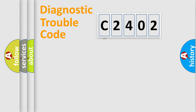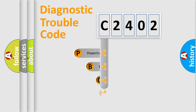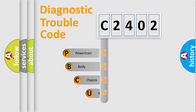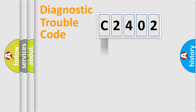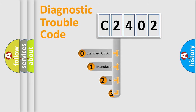First, let's look at the history of diagnostic fault code composition according to the OBD2 protocol. We divide the electric system of an automobile into four basic units: powertrain, body, chassis, and network. This distribution is defined in the first character of the code.